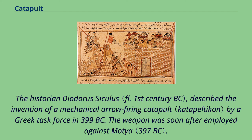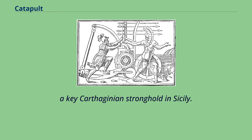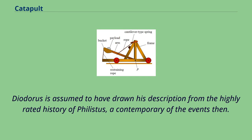The historian Diodorus Siculus described the invention of a mechanical arrow-firing catapult by a Greek task force in 399 BC. The weapon was soon after employed against Moja, a key Carthaginian stronghold in Sicily. Diodorus is assumed to have drawn his description from the highly rated history of Philistus, a contemporary of the events.